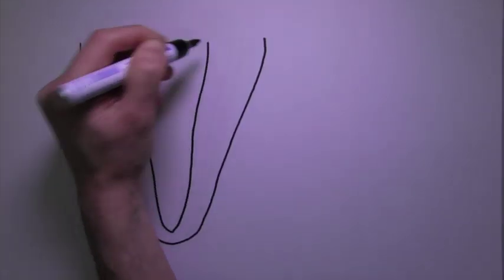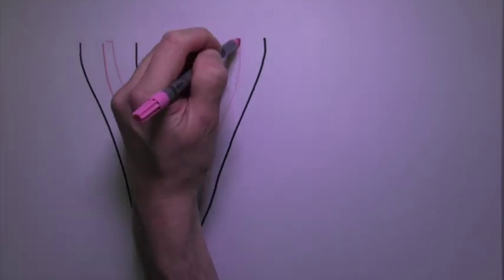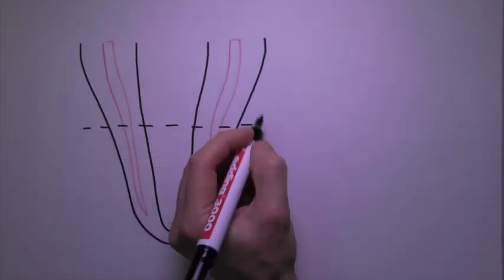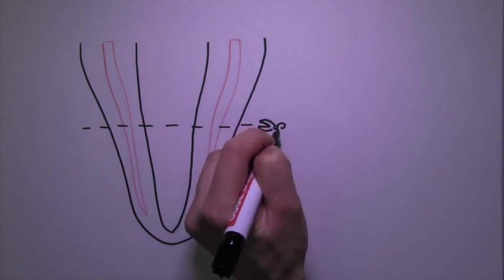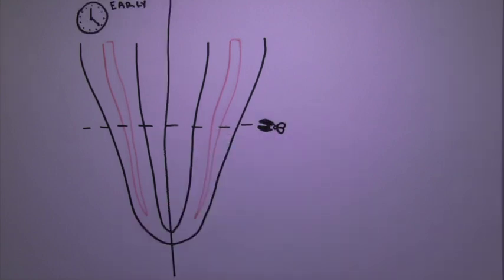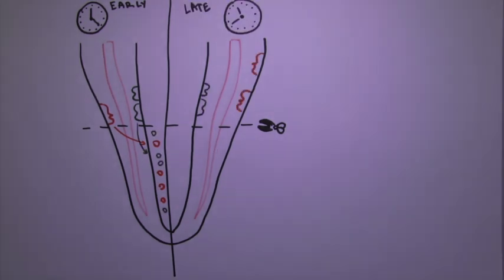Cells migrated to enter the blastema at different days during the regrowth of the fingertip. That timing of arrival dictated what cells would make. Cells that arrived early made the new skeleton, while late arriving cells made new periskeletal and dermal cells.